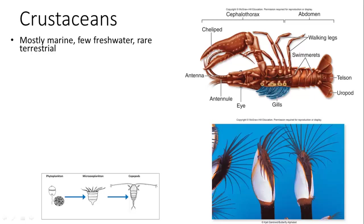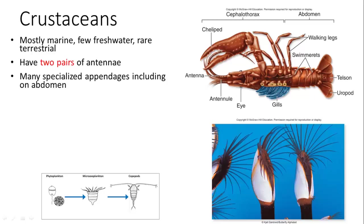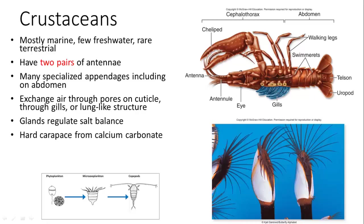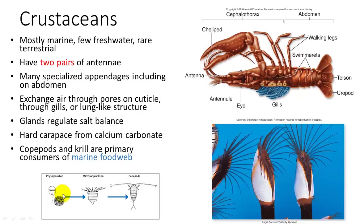Crustaceans are mostly marine arthropods with a few freshwater species. They have two pairs of antennae and many specialized appendages for defense and prey capture. Gas exchange occurs through pores in the cuticle, gills, or a lung-like structure for land species. They have glands for regulating salt and a hard carapace of calcium carbonate. Copepods and krill are small crustaceans that form a critical base of marine food webs.